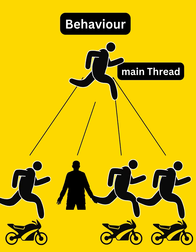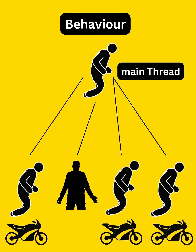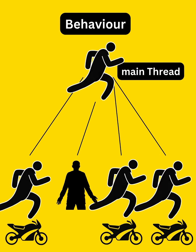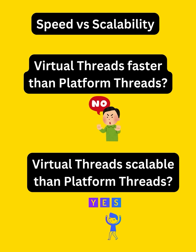This behavior makes them non-blocking at the OS level during IO operations. This means that virtual threads don't give you extra speed compared to platform threads — they just give you more scalability.